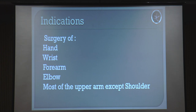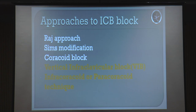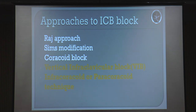So why do we need an infraclavicular block? Which surgeries can we do? Any surgeries from the mid-arm level - except the shoulder - below the shoulders till your fingers. Any surgery you can do with your infraclavicular block. Many approaches have been described, but the most important two approaches which we follow are the vertical infraclavicular block and the paracoracoid approach. These are the two approaches we regularly follow.